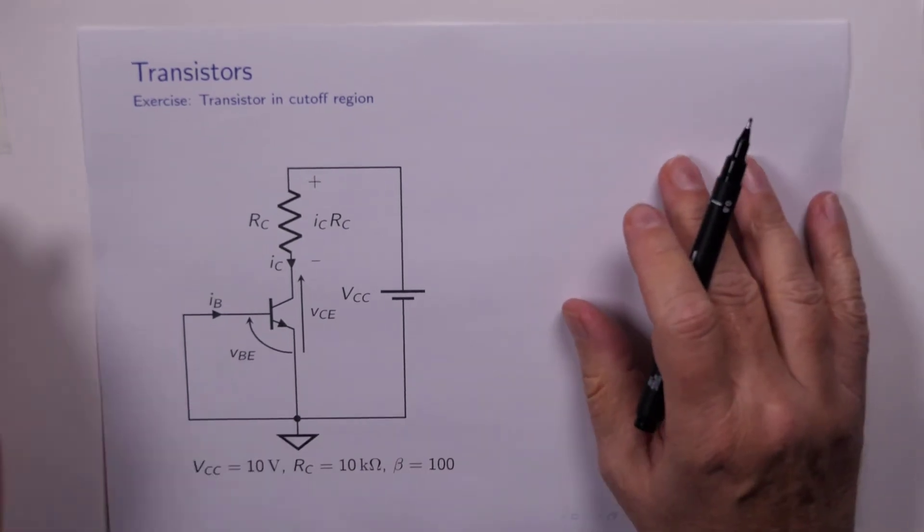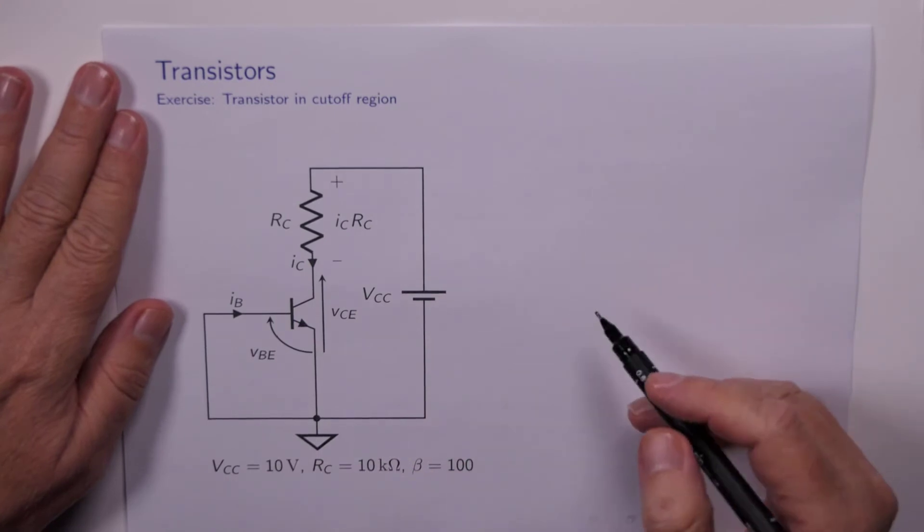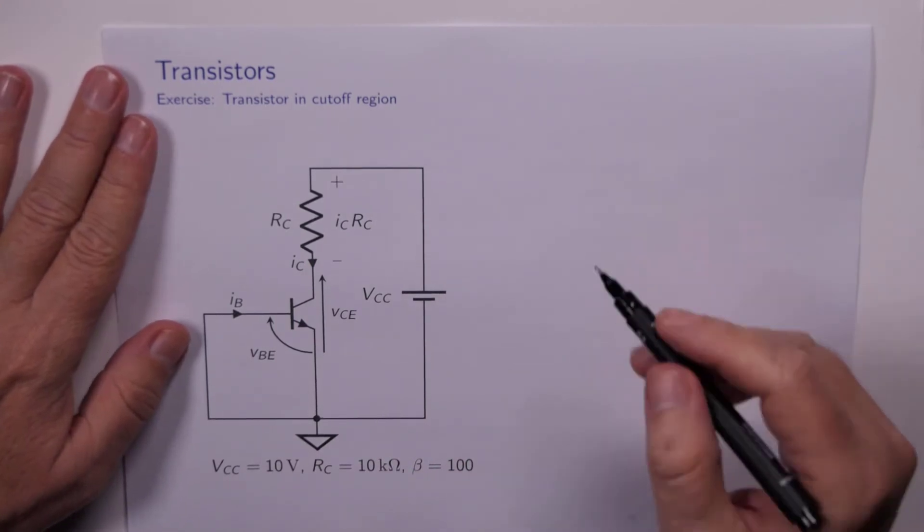therefore the collector emitter voltage is sitting at VCC, 10 volts. Another way we could do that, if we wanted to, is just write down an equation for that loop.